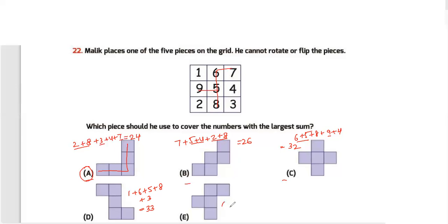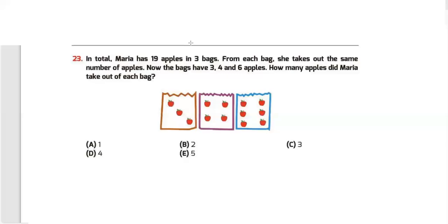For option E, the numbers are 6, 7, 5, 8, 9 — that gives 6 plus 5 is 11, plus 9 is 20, plus 8 is 28, plus 7 is 35. This is the biggest total, so my answer for question 22 is option E.